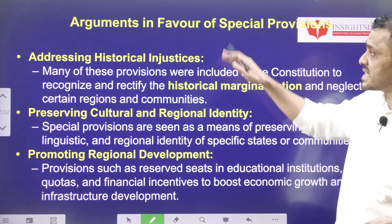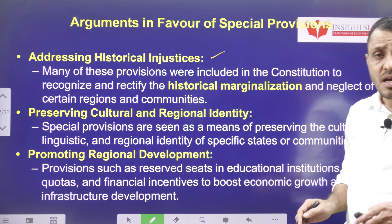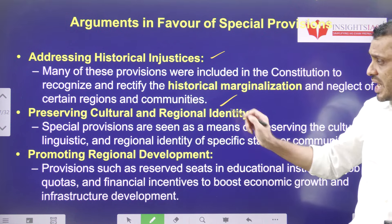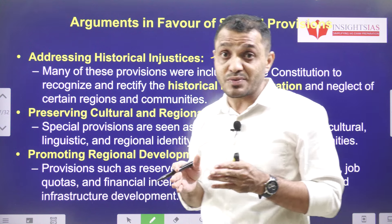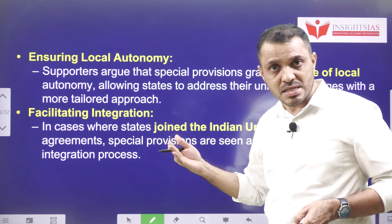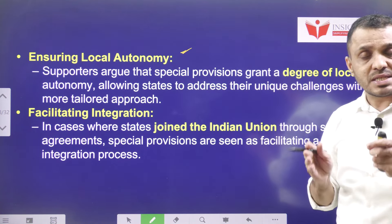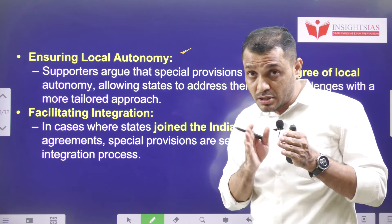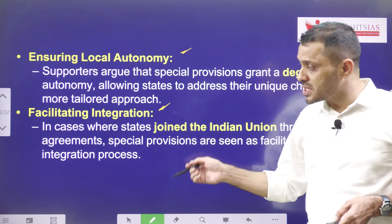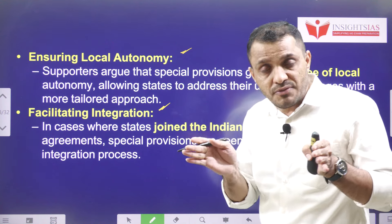Arguments in favour of special status: First, historically different places have faced injustices, which can be undone through special status. Second, preserving cultural and regional identity — different places in India have distinct cultural and regional identities that can be appreciated through special status. Third, promoting regional development — backward areas can be promoted by ensuring local autonomy, as seen in Schedule 6 states with autonomous district councils. Fourth, facilitating integration — by giving special status, you can win the confidence of the people and facilitate national integration.